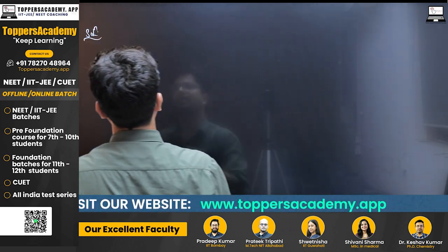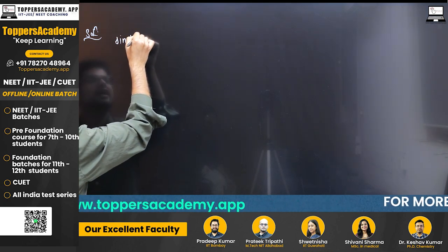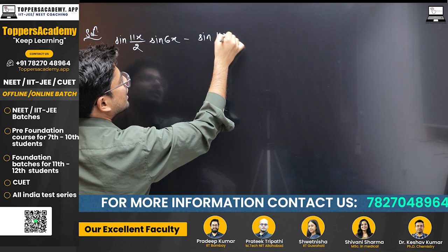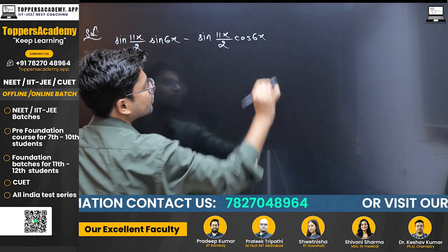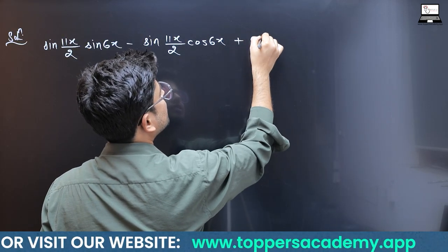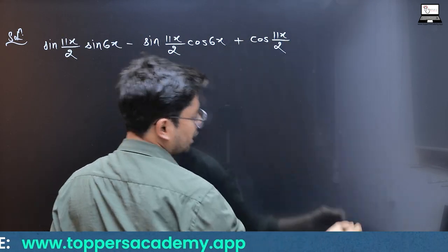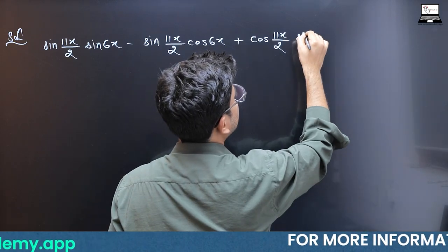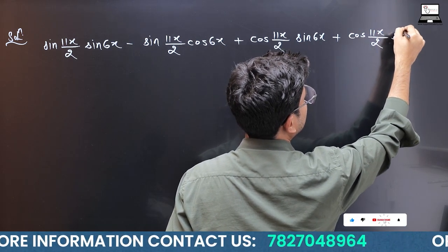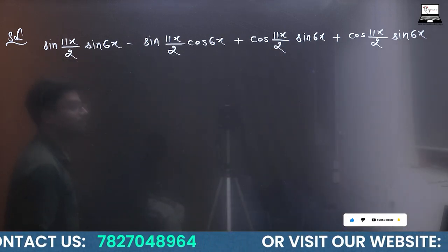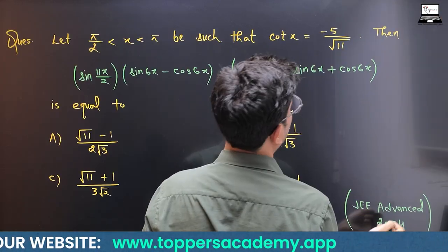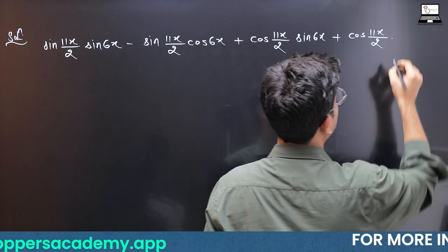When you simplify this expression you will get sin(11x/2)·sin(6x) minus sin(11x/2)·cos(6x), and when you open the bracket you will get plus cos(11x/2)·sin(6x) plus cos(11x/2)·cos(6x).